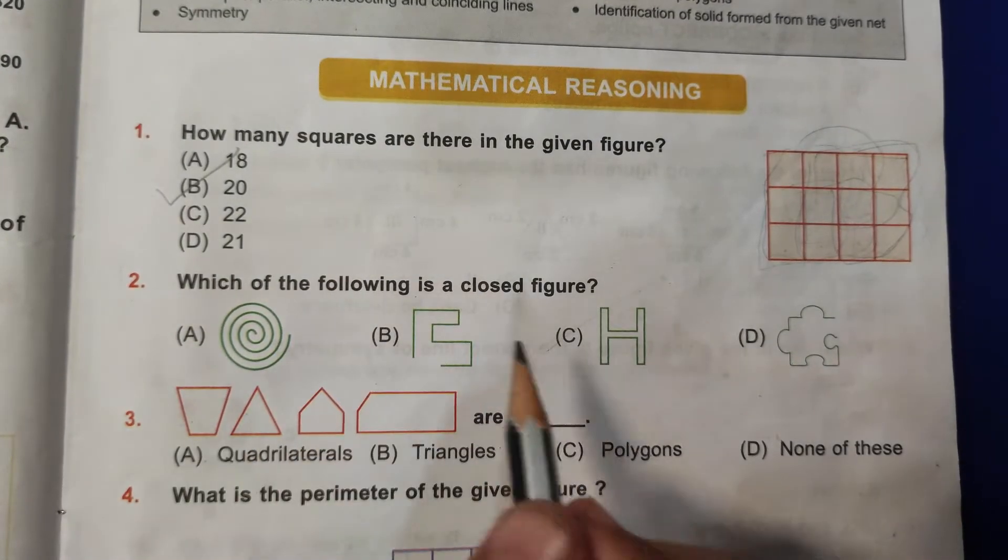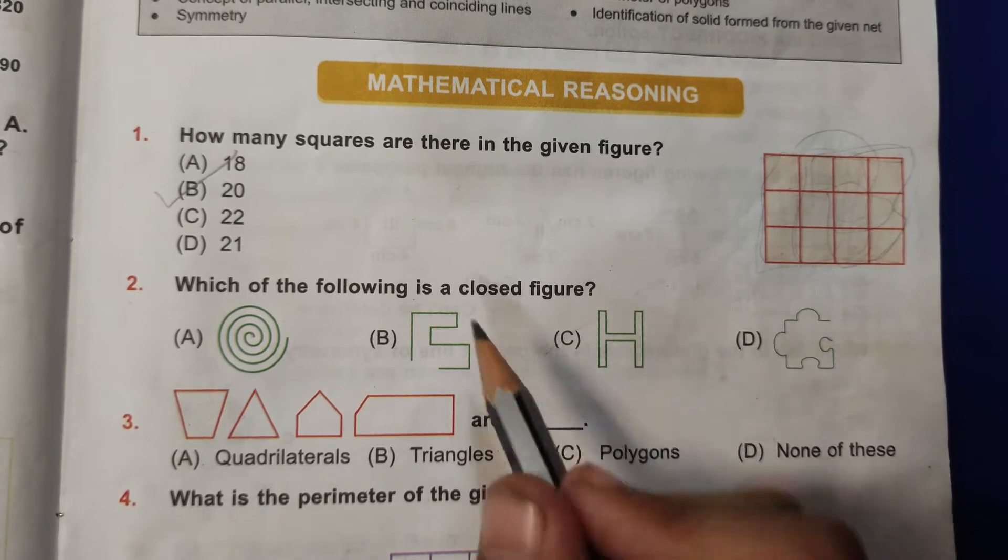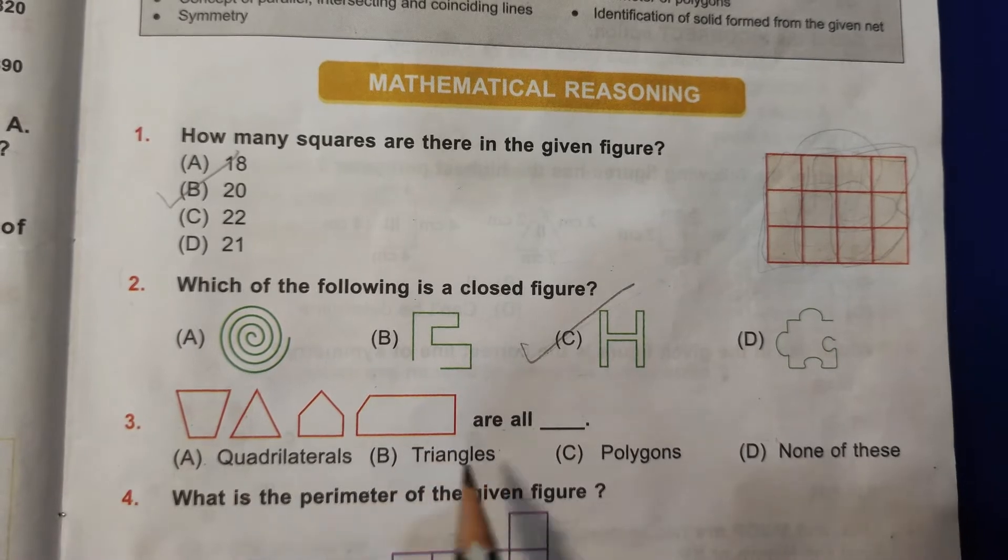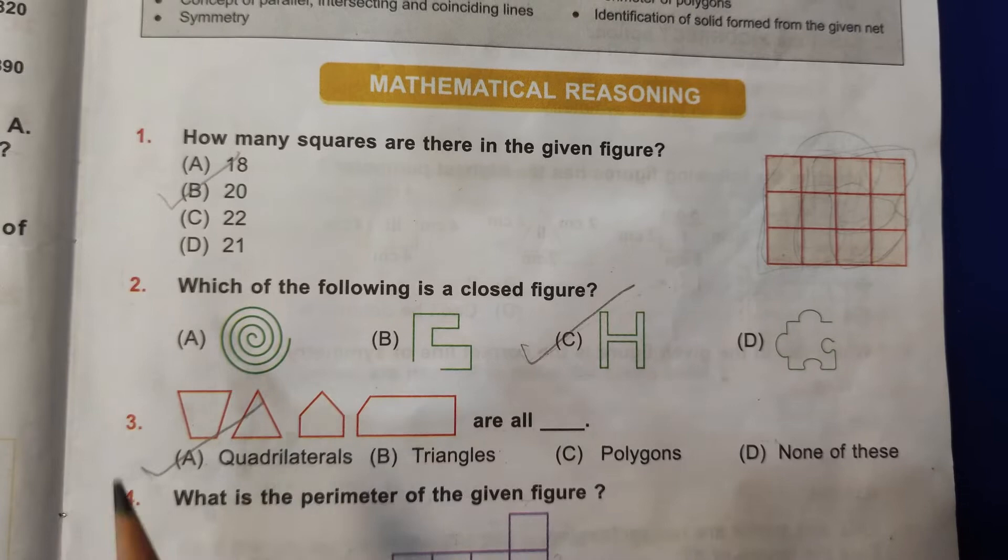Second question: which of the following is a closed figure? This H is a closed figure, so C is the correct answer. Then third, all shapes are quadrilaterals, so A is the correct answer.